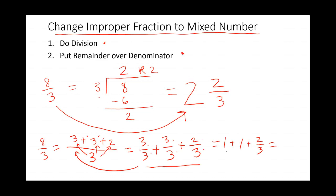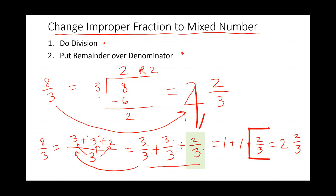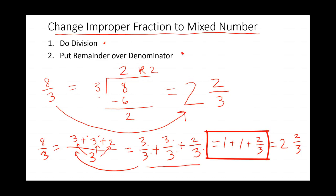And there we go — 2 and 2 thirds. Remember from video number 8: any number divided by itself is 1. This 3 divided by 3 is 1, this other 3 divided by 3 is 1, and we're left with 2 thirds to add to 1 plus 1.